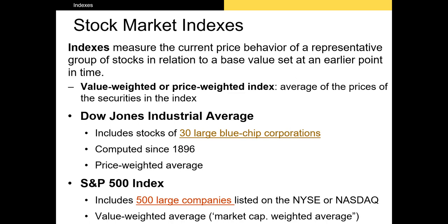The stocks comprising the index change throughout time. For example, General Electric was listed on the index from its inception until 2018, after its market cap fell to an unacceptable level. The Dow Jones Industrial Average is our best example of a price-weighted average index.